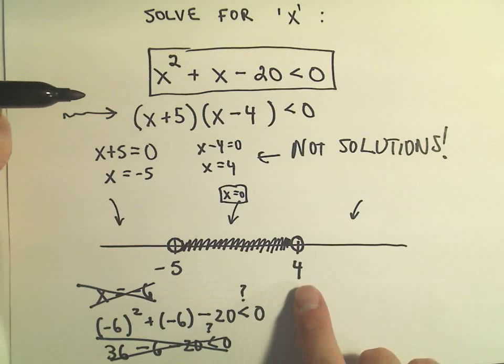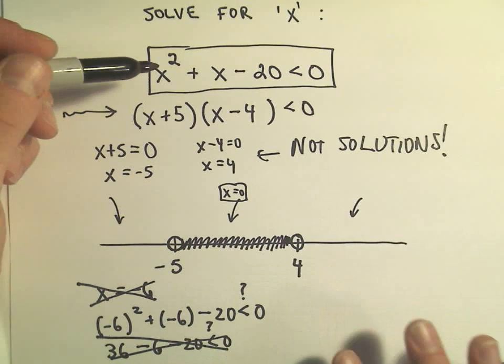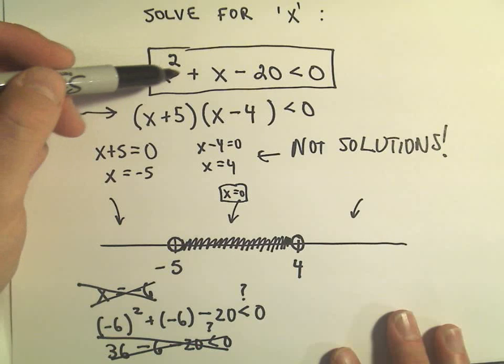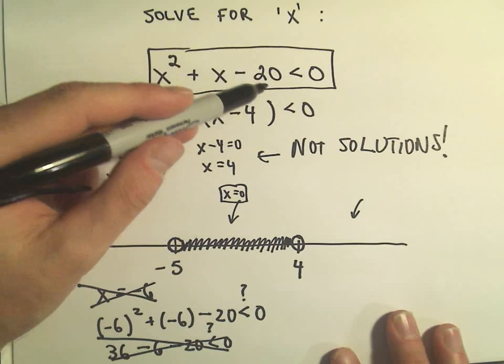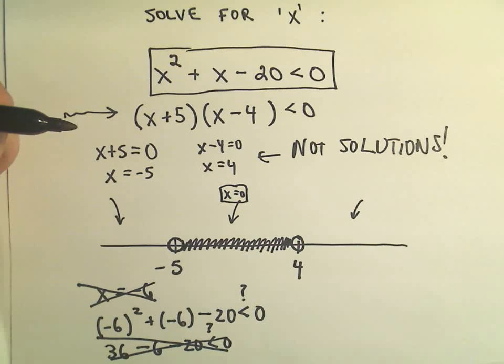And now we take any number bigger than 4, maybe I'll take a million. Well, notice if you take a million and square it and add a million, that's going to be a big positive number. If you subtract 20, that's not going to be less than 0. So anything bigger than 4 also will not work.